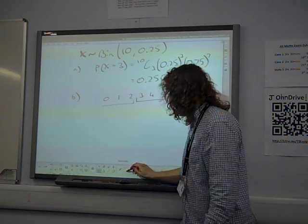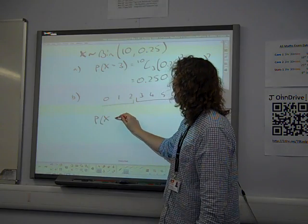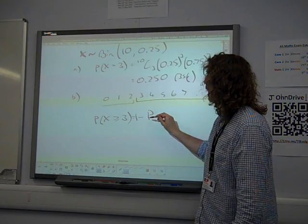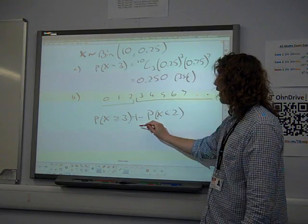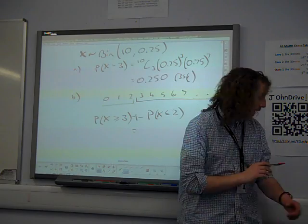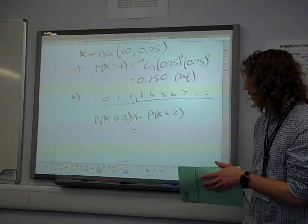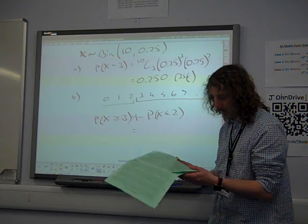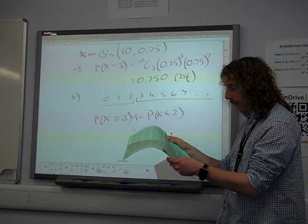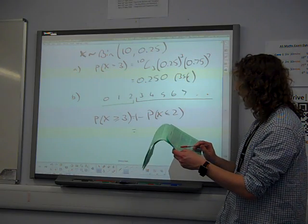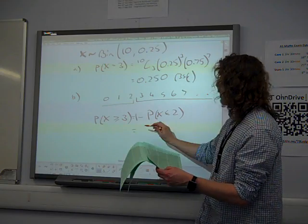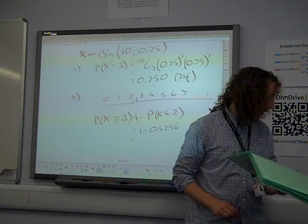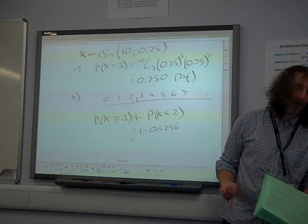Okay? So the probability of x being at least three, greater than or equal to three, is one minus the probability of x being less than or equal to two. And we're going to go to the formula booklet. We're on n equals ten. We're looking at the 0.25 column. We're looking down the 0.25 column to the 2 number, and it's 0.5256. And 1 minus 0.5256 gives us 0.4744.